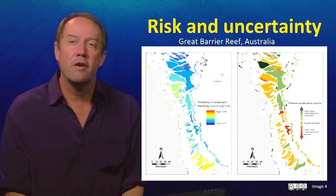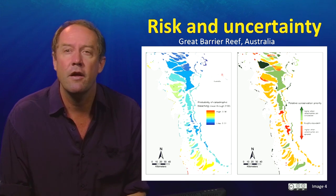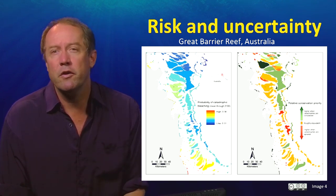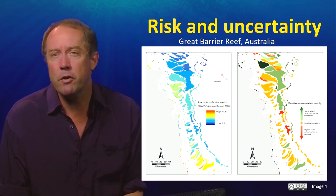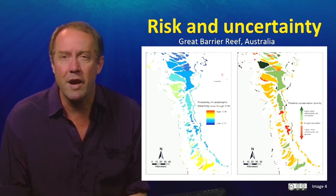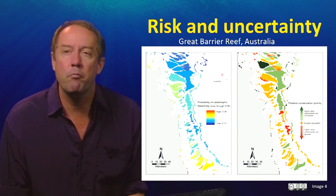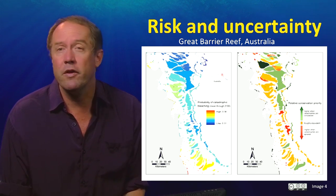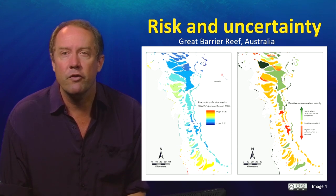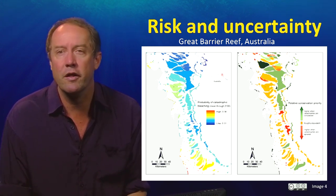Another factor to consider when building protected area systems is catastrophes. Marine protected areas can't stop coral bleaching or hurricanes — they can stop threats like fishing, but not everything. The map on the left shows part of the Great Barrier Reef Marine Park where the colours reflect the probability of coral bleaching. The redder areas are highly likely to be bleached in the future; the bluer, cooler areas are less likely to be affected. We can accommodate this in our protected area design by preferentially choosing areas less likely to be hit by catastrophes, as shown on the right where green sites at the top become preferentially selected over the more orange or red sites.